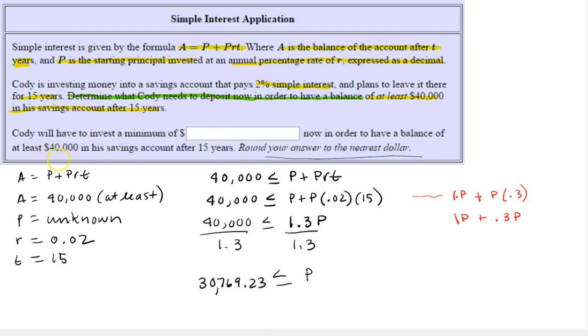Notice it says to round our answer to the nearest dollar. And because we need to exceed $40,000, at least $40,000, we're going to need to round this up. So round up, so it is greater than, that's another way of saying at least, $40,000. So even though this is $0.23 and we normally round down, we're going to round this up to $30,770. So the initial amount invested has to be greater than or equal to $30,770.